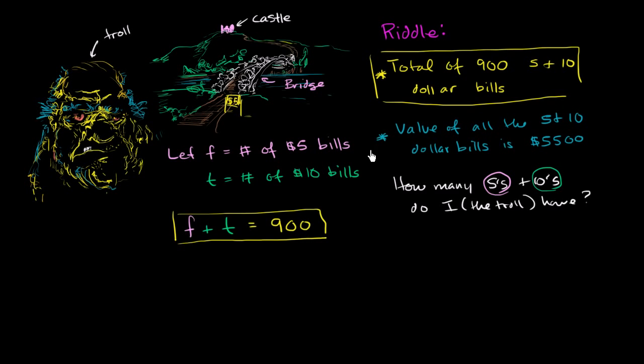Can we represent this one? Can we represent this one mathematically given these variable definitions that we created? Well, let's think separately about the value of the $5 bills and the value of the $10 bills. What's the value of all of the $5 bills? Well, each $5 bill is worth $5. So it's going to be 5 times the number of $5 bills that we have.